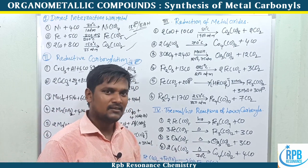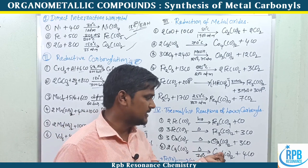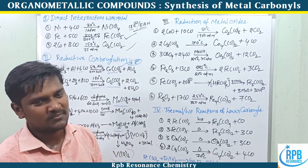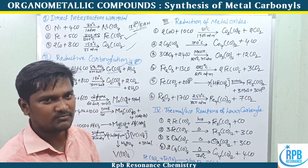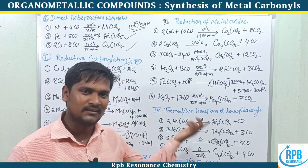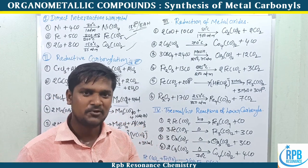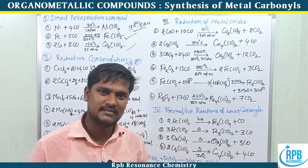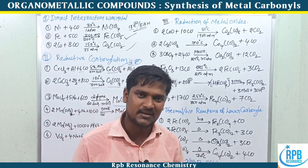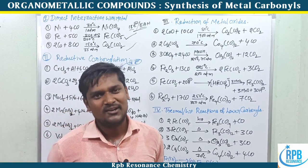Osmium pentacarbonyl under thermal conditions undergoes trimerization to give Os3(CO)12 — the trimer form of osmium carbonyls. Similarly, Co2(CO)8 under thermal conditions at 70°C undergoes tetramerization — dimer of dimer — giving Co4(CO)12.